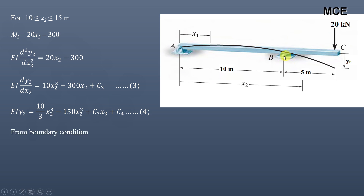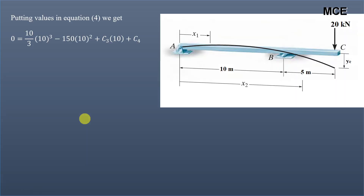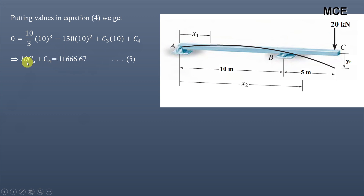This equation is valid from x2 = 10 to 15 m, measured from A. Applying the boundary condition at support B: x2 = 10, y2 = 0. Substituting into equation 4: (10/3)(10)³ − 150(10)² + C3(10) + C4 = 0, which simplifies to the linear equation 10·C3 + C4 = 11666.67. This is equation 5.